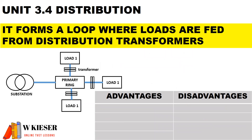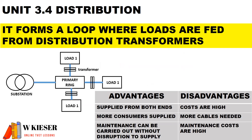For the ring feeder system, it forms a loop where loads are fed from distribution transformers. They are supplied from both ends, more consumers can be supplied, and maintenance can be carried out without disruption to the supply network. However, the disadvantages are that the costs are high, more cables are needed, and the maintenance costs are higher.